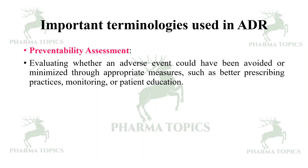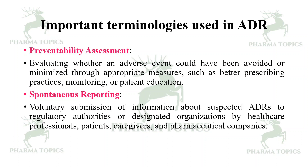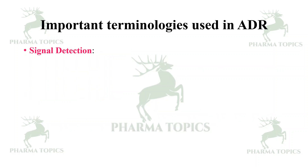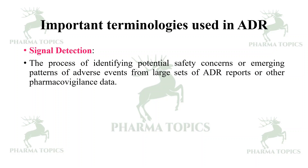Spontaneous reporting is the voluntary submission of information about suspected adverse drug reactions to regulatory authorities or designated organizations by healthcare professionals, patients, caregivers, and pharmaceutical companies. Signal detection is the process of identifying potential safety concerns or emerging patterns of adverse events from large sets of ADR reports or other pharmacovigilance data.